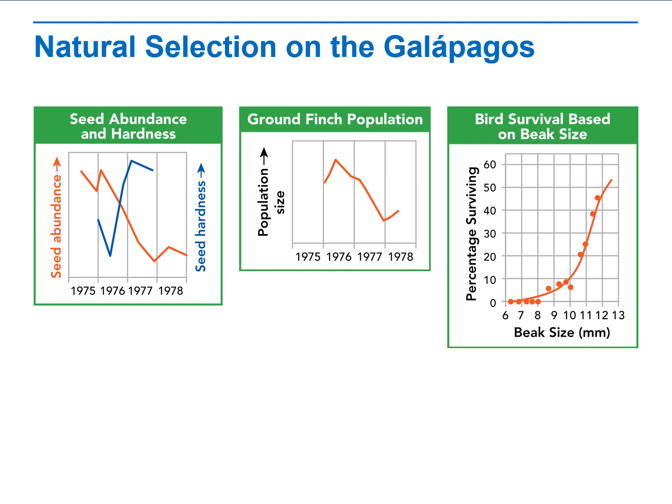Like any scientific theory, evolutionary theory is constantly reviewed as new data are gathered. Researchers still debate important questions, such as precisely how new species arise, why species become extinct, and how exactly life began. However, any questions that remain are about how evolution works, not whether evolution occurs. To scientists, evolution is the key to understanding the natural world.